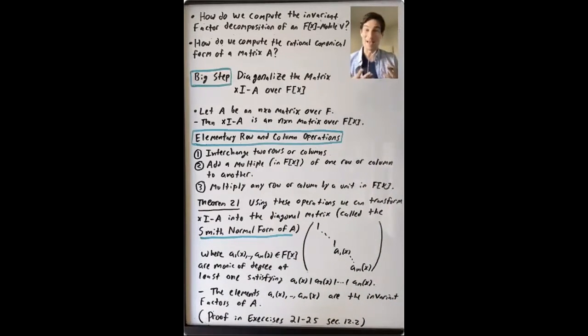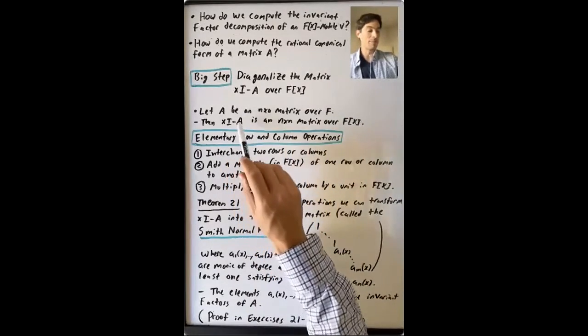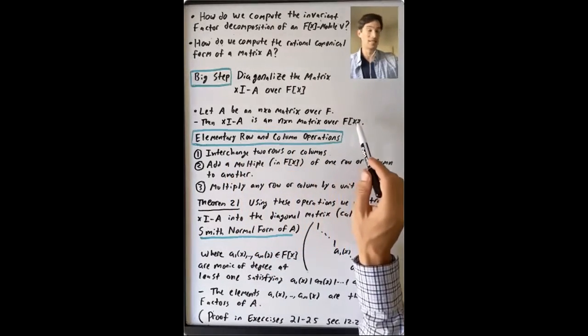Okay, so the question is, what does that mean? A is an n by n matrix with entries in F, x times I minus A is an n by n matrix with entries in F[x].